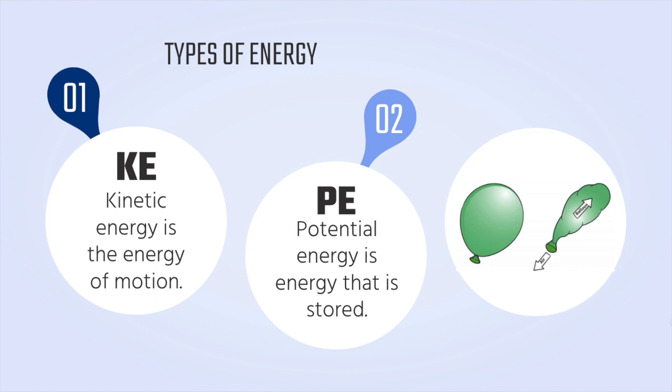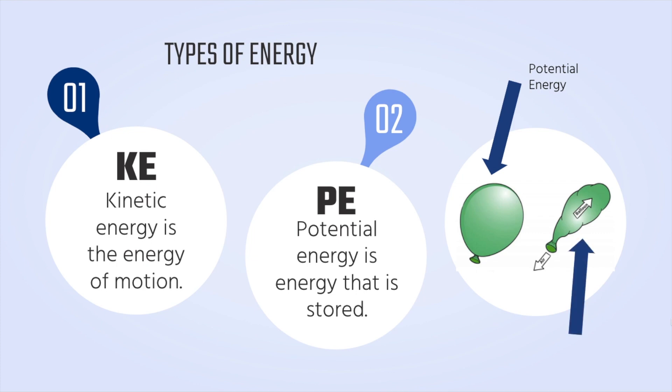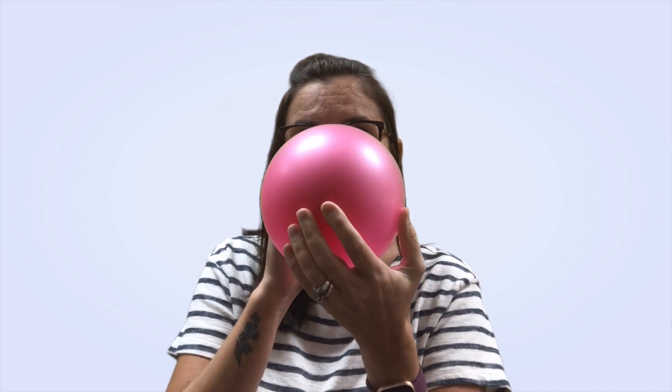A great example of that is balloons. So if I put air in a balloon, it would have potential energy — stored energy. If I let the air out of the balloon, the balloon would start to move and that would be kinetic energy. When a balloon is full of air, it has a lot of potential energy, and when I let it go, it becomes kinetic energy — energy in motion. That's the difference between potential and kinetic.